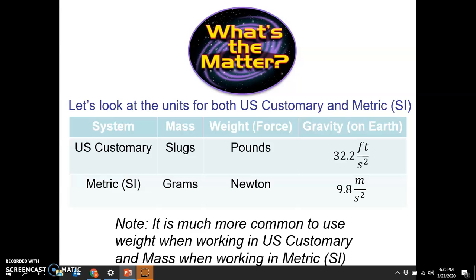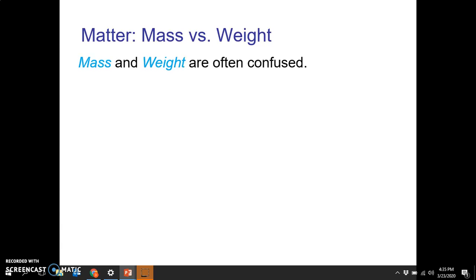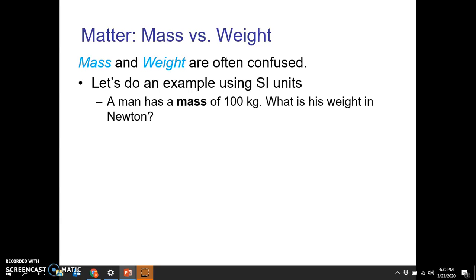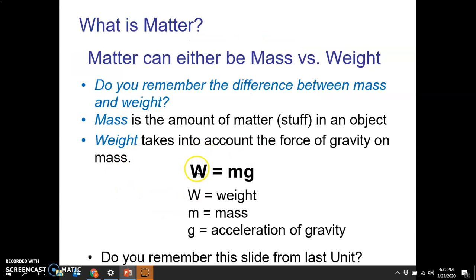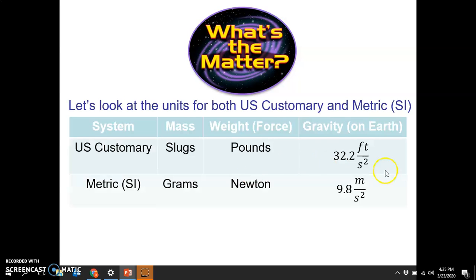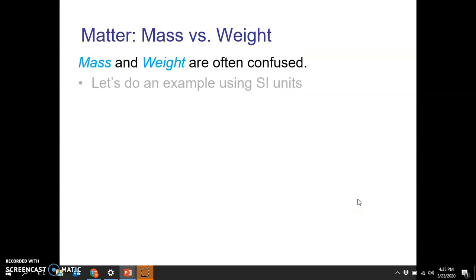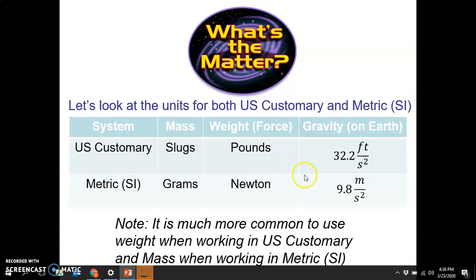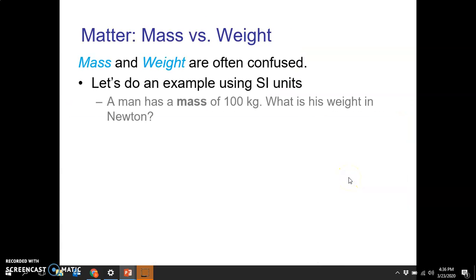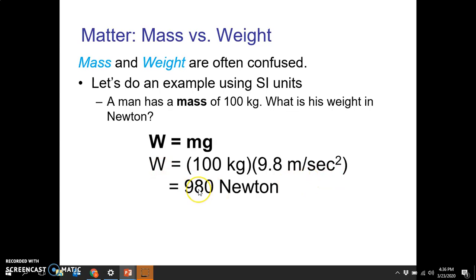Let's do some quick examples to help you use them interchangeably. Mass and weight are often confused. Let's do an example in SI units. A man has a mass of 100 kilograms. What is his weight in newtons? Well, let's quickly go back a few slides. We remember that weight, or force, is equal to mass times the force of gravity. Force of gravity is shown in this chart. In this problem, we are given the mass. We want to know the weight. We have our weight equals mass times gravity. Plug in the mass, the gravity is 9.8, which we got over here. And we get 980 newtons.